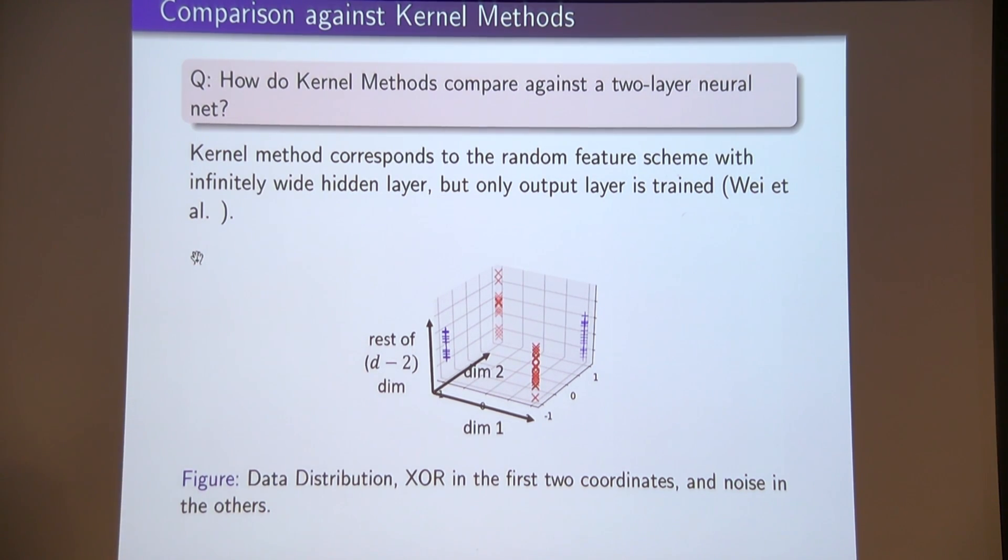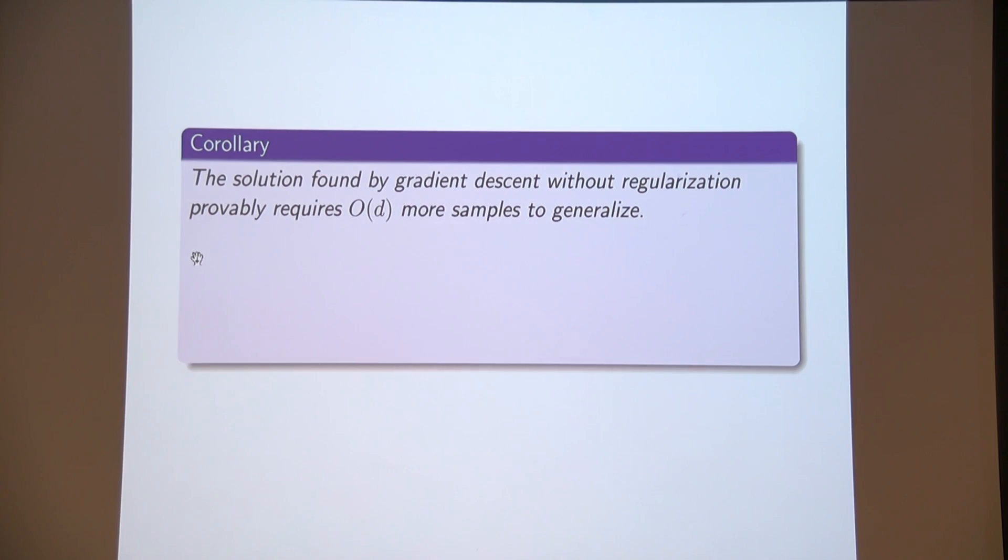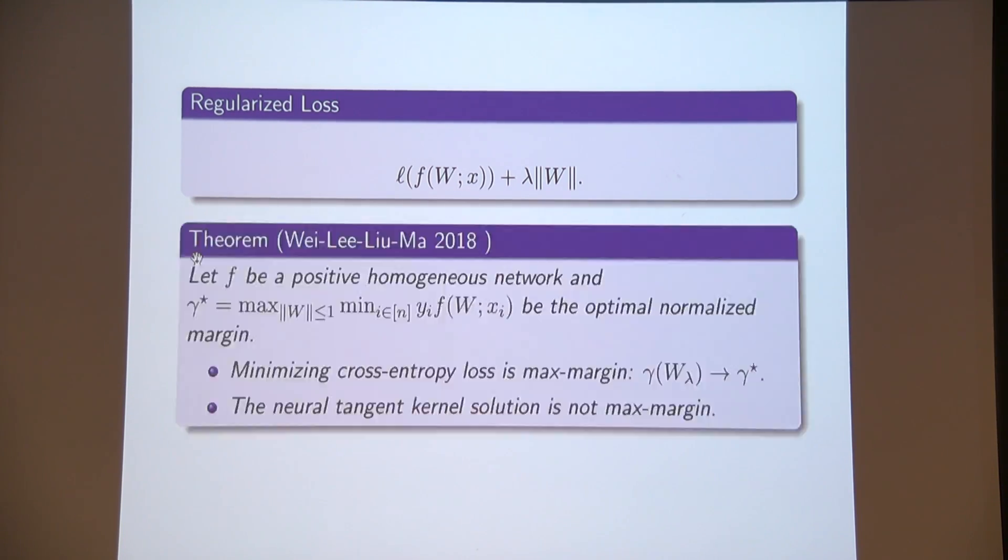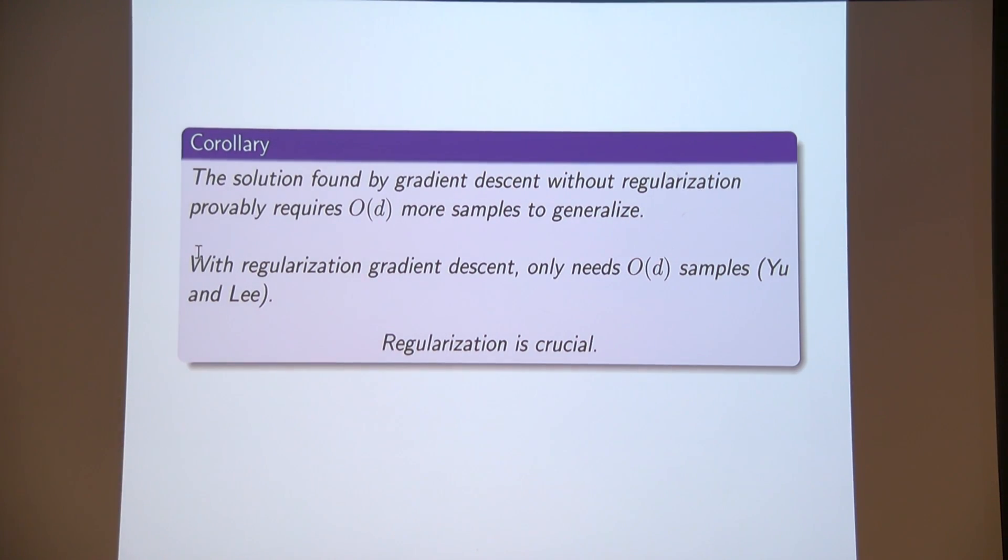Let's look at a very simple example to compare. My data distribution is XOR in two coordinates. Think of it's x1 times x2 in the first two. The data is in d dimensions. The last d minus two coordinates are just noise. There's no signal. And Y is like XOR of the first two points. This is exactly a case where kernel methods will have trouble localizing because if it needs to learn all pairwise interactions, it needs to look at all d choose two coordinates, which is obviously going to take d squared samples. We do formally prove a lower bound here that the kernel method needs d squared samples to generalize. If you can get the max margin solution, the global minimum of this regularized solution, you need d samples. We are able to show now for this XOR example, gradient descent with regularization only needs d samples. So there's a provable gap. The kernel method in this XOR example needs d squared samples. With regularization, gradient descent only needs d samples.